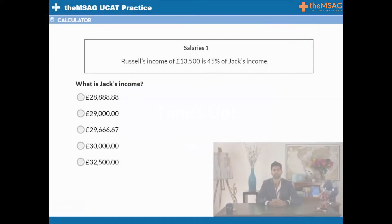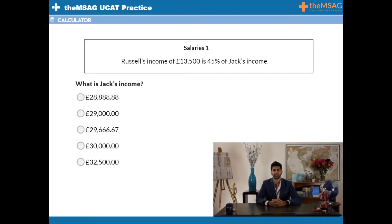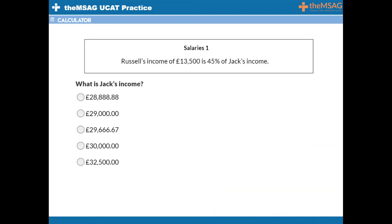Question 2. Russell's income of £13,500 is 45% of Jack's income. What is Jack's income? The answer is D, £30,000.